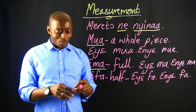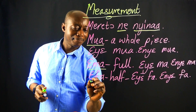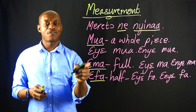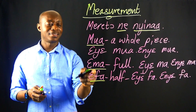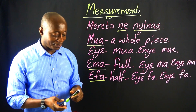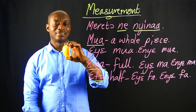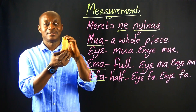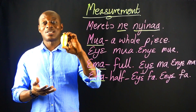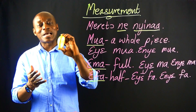So the key words here: EYE FAN — it is half; EYE FAN — it is not half. Now look at this. This is a quarter, isn't it? Yes, this is a quarter.